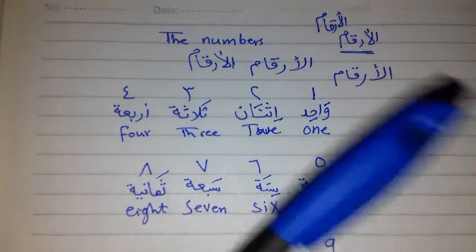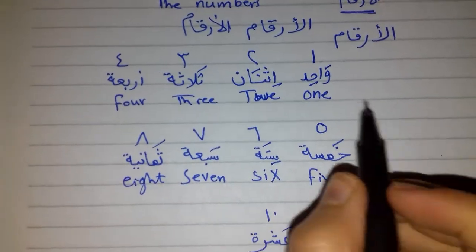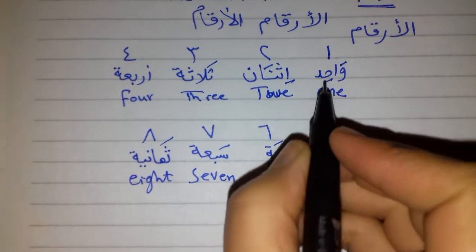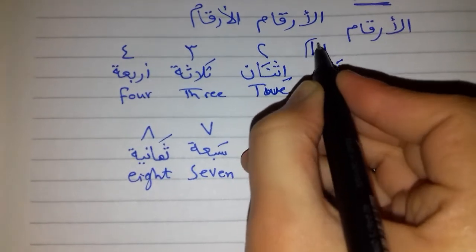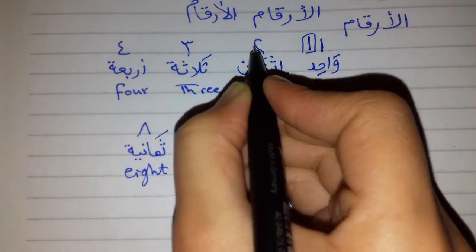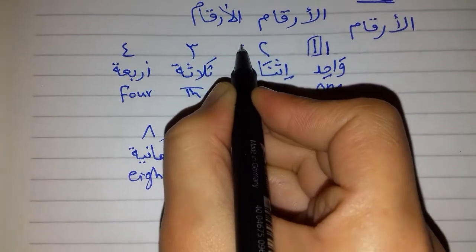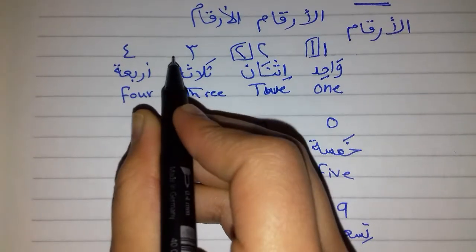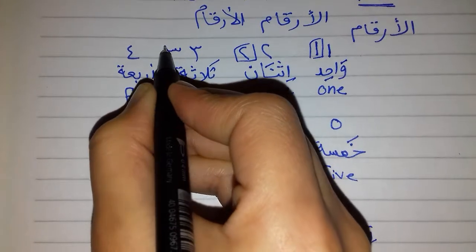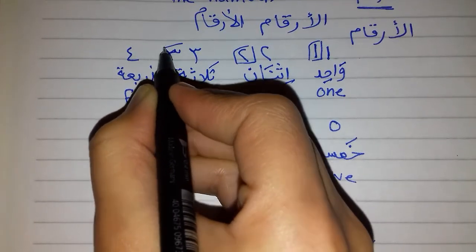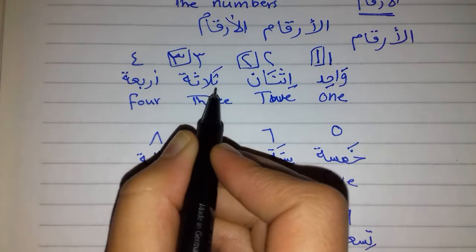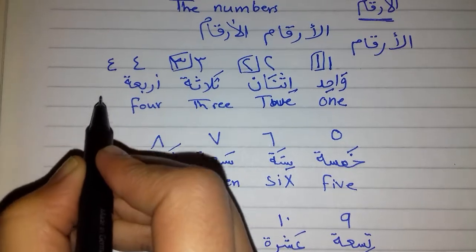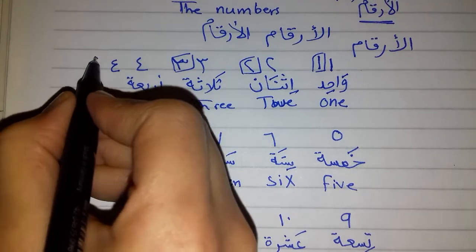So let's go to the numbers. This is wahid — wahid means one, it's written like this. Then we have ithnan — ithnan means two. Then three means thalatha — thalatha. Then arba — arba. Yes, it is very similar.